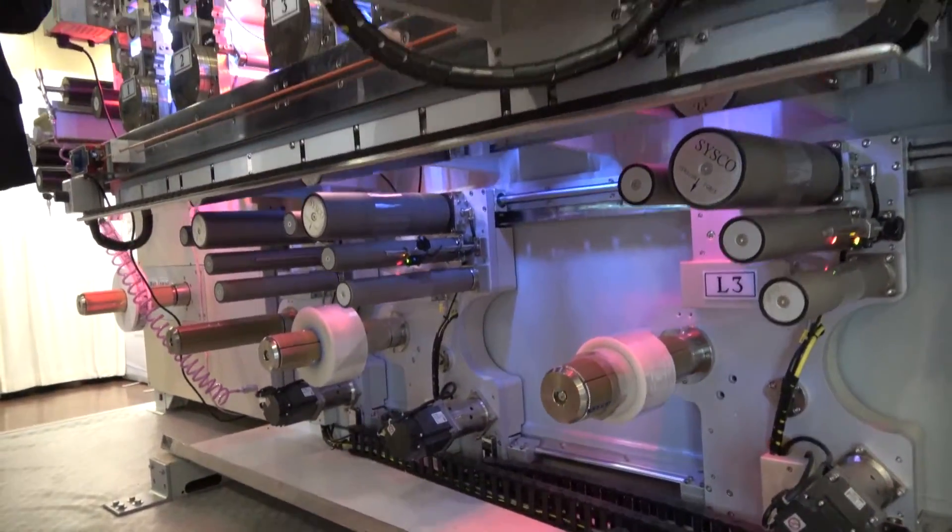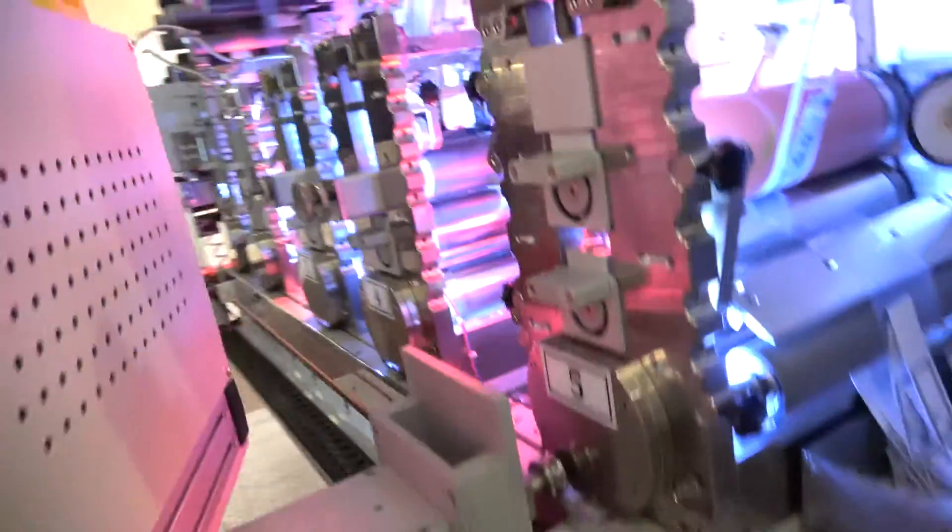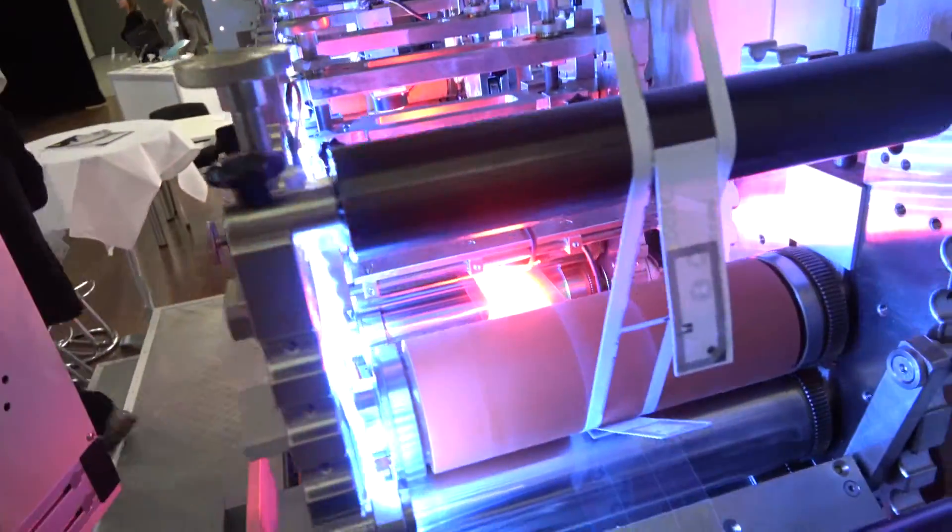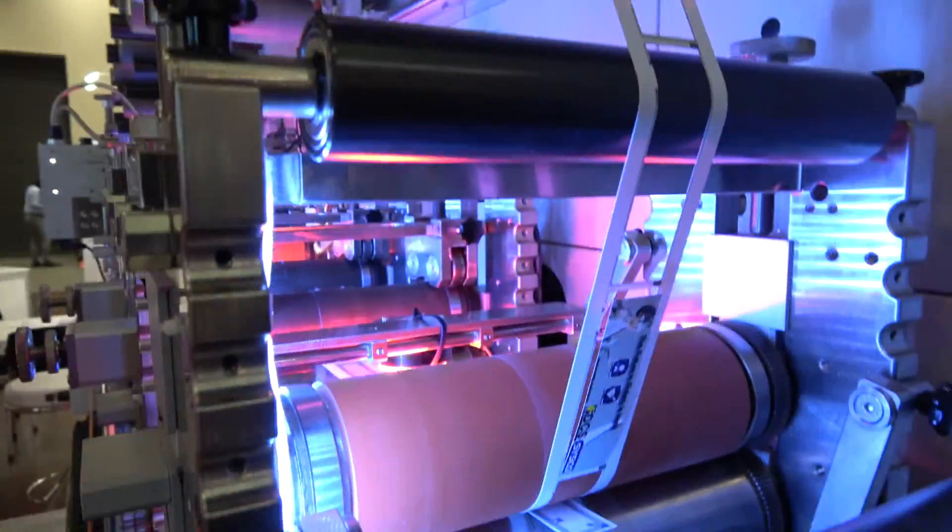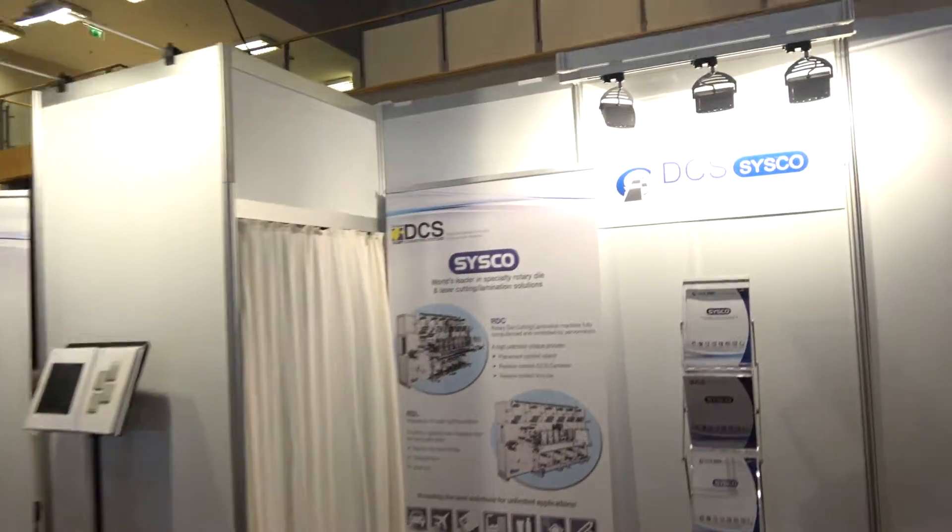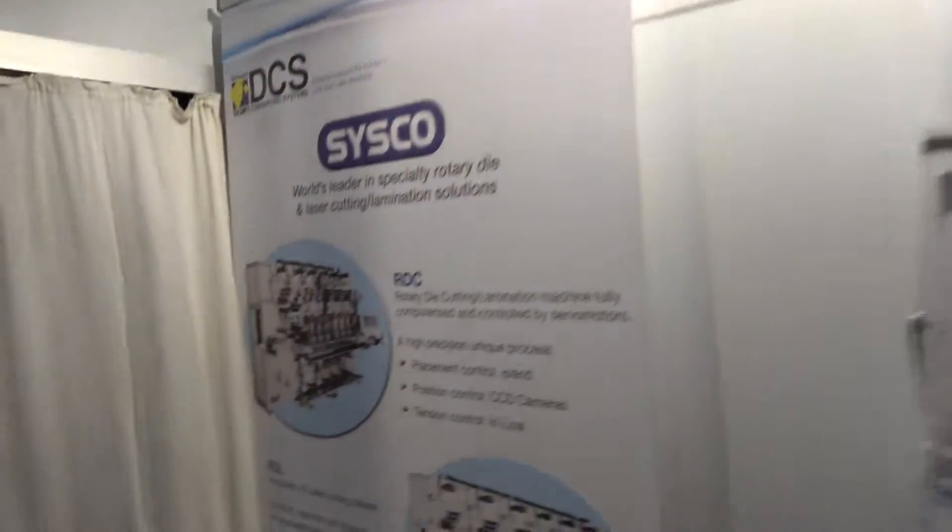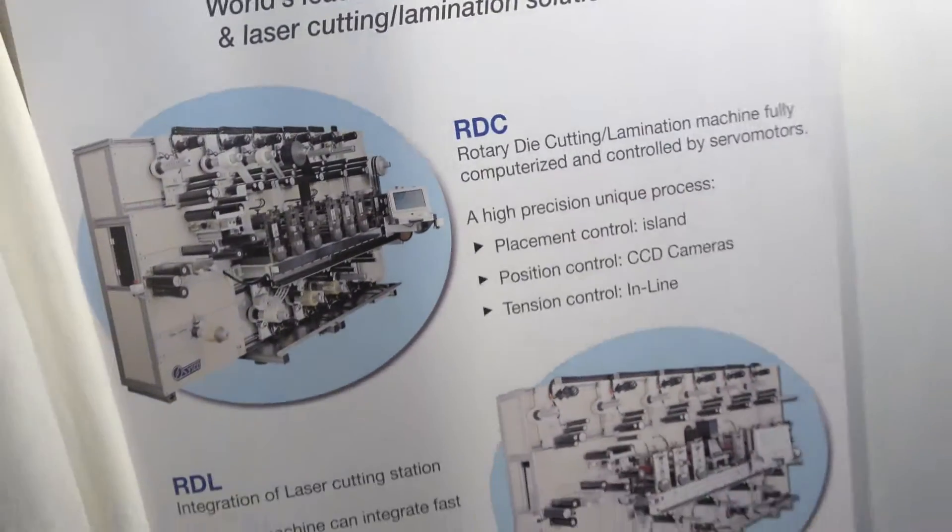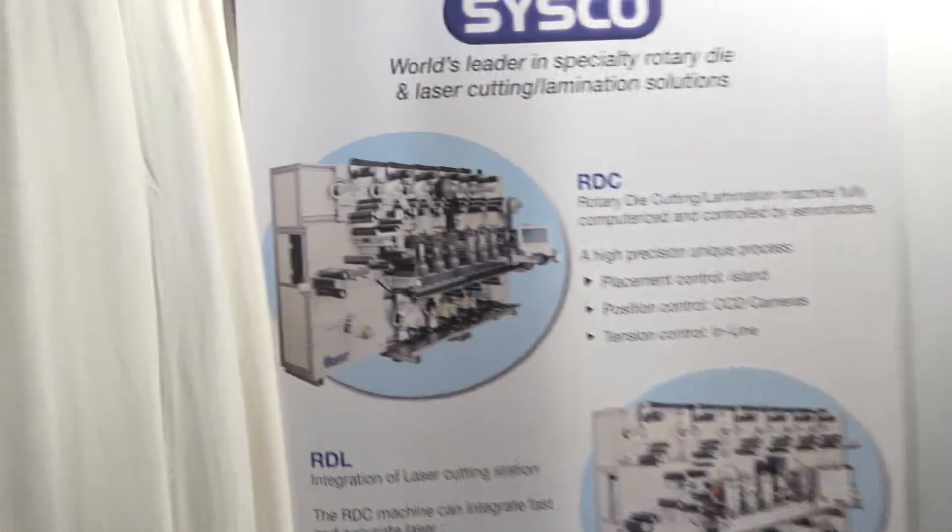Cool. So, what is DCS? DCS is a company in France to sell the equipment of Cisco machines in this case. Cisco. Cisco. Cisco is a Taiwanese manufacturer in Taiwan. Yeah.